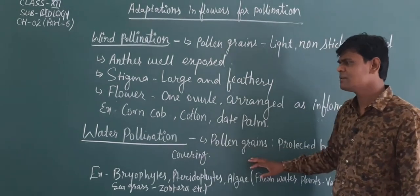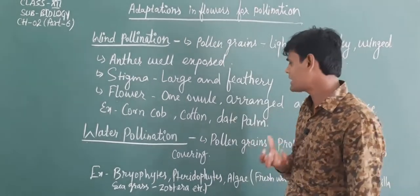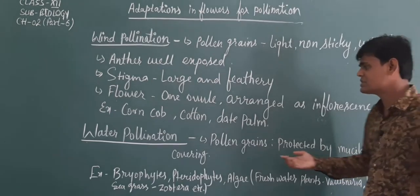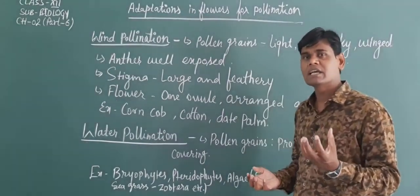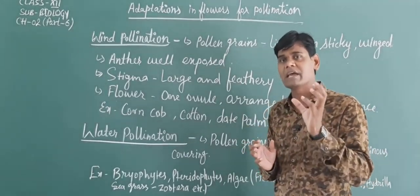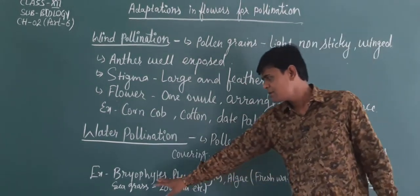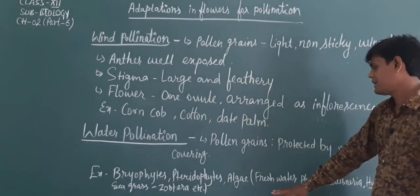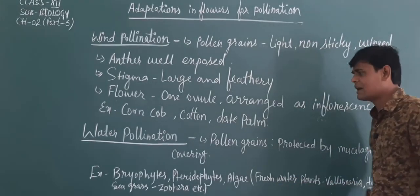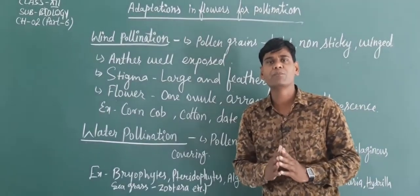Now let me discuss about water pollination. In water-pollinated flowers, the pollen grains are protected by a mucilaginous covering. Examples include Hydrilla, seagrass or Zostera, etc.